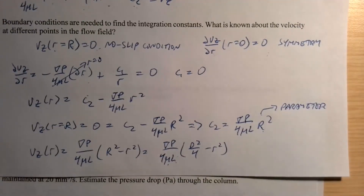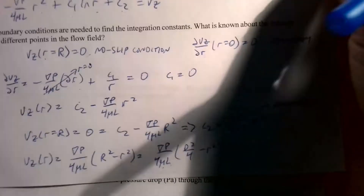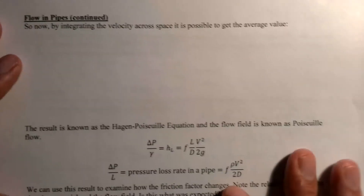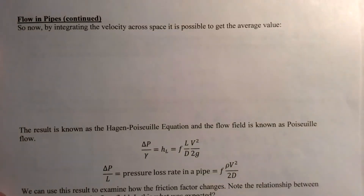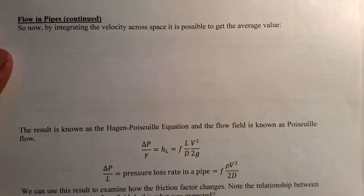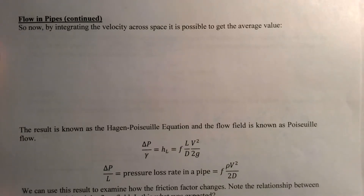Our goal is to get to the friction factor we can use in the Darcy-Weisbach equation, so we're doing all this work for a reason. We need to get the average value — the flow rate and average velocity — because it's not really practical to measure velocity at different points in a pipe.